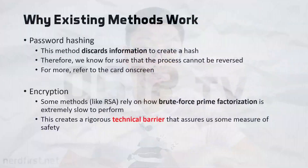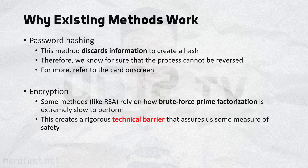For example, our encryption and our password hashing is secure because of the mathematical operations that are performed on it. These operations are considered difficult to reverse. In the context of hashing, these are just impossible to reverse.